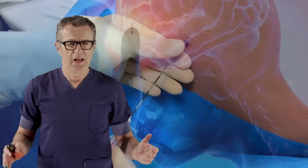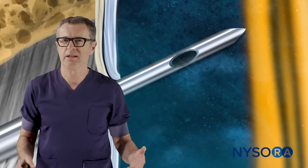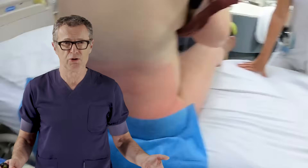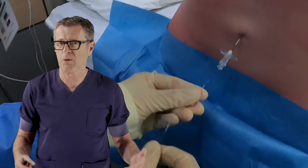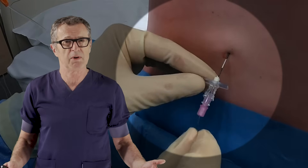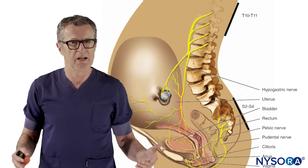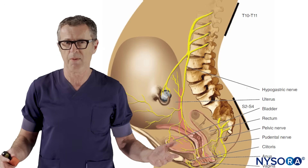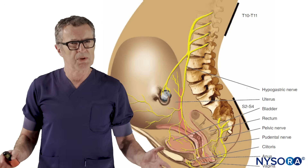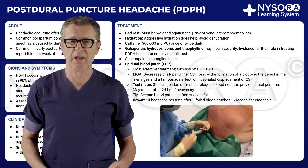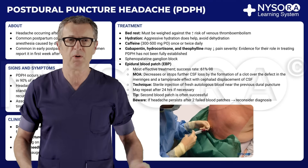Epidural blood patch is a treatment for post-dural puncture headache. Post-dural puncture headache is a typical headache that patients develop after their dura has been violated with a needle during either spinal anesthesia or epidural anesthesia. One of the most common clinical scenarios is pregnant women who are having an epidural analgesia for labor.